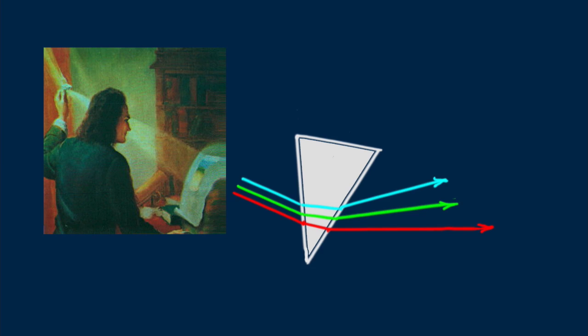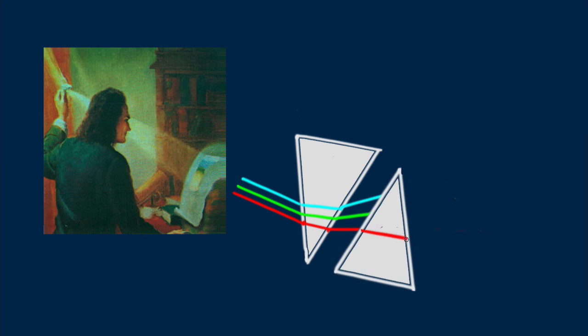This spreading of light by a prism is called dispersion. Newton went on to use a second prism to effectively undo the dispersion and recombine the spectrum to white light. Newton found fame with this discovery long before he developed his laws of motion.